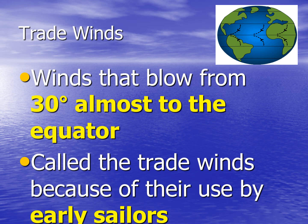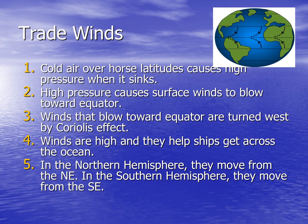Trade winds are winds that blow from 30 degrees almost to the equator. They are called trade winds because of their use by early sailors. Trade winds happen when cold air over horse latitudes causes high pressure when it sinks. High pressure causes surface winds to blow toward the equator. Winds that blow toward the equator are turned west by the Coriolis effect. Winds are high and they help ships get across the ocean. In the northern hemisphere, they move from the northeast; in the southern hemisphere, they move from the southeast.